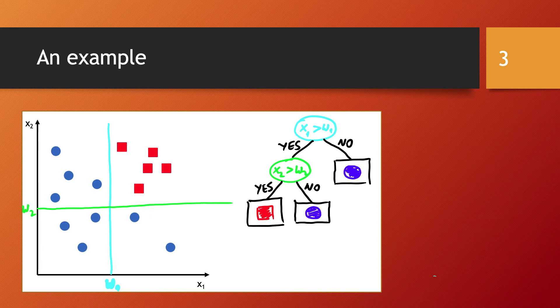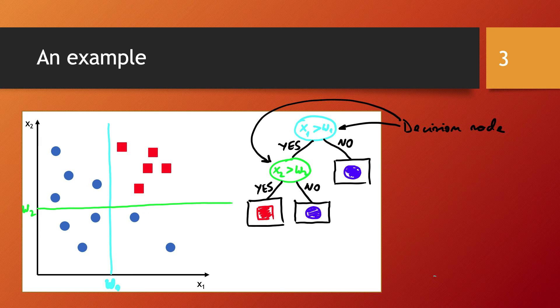So a decision tree is a hierarchical model for supervised learning, whereby the local region is identified in a sequence of recursive splits in a smaller number of steps. A decision tree is composed of internal decision nodes, and in our example a decision node would be the root node, but we had another decision node right here. And we also have terminal leaves. We had one here and we had two more right here.